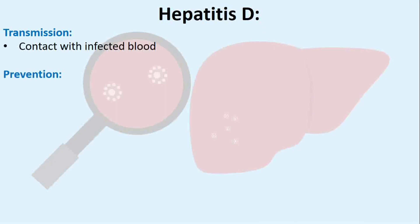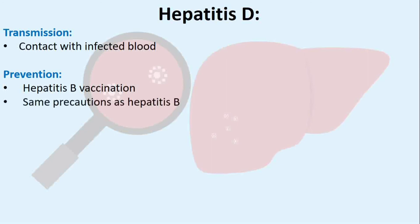Prevention: Hepatitis D is only found in people who are already infected with the hepatitis B virus. People not already infected with hepatitis B should get the hepatitis B vaccination. To reduce exposure, avoid sharing needles and other items such as toothbrushes, razors, or nail scissors with an infected person. It is also wise to avoid getting tattoos or body piercings from unlicensed facilities.